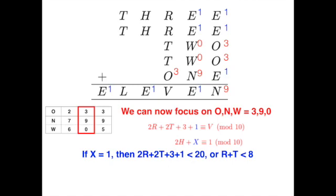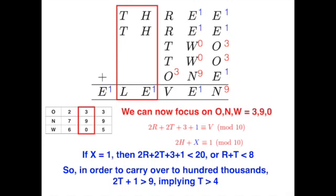Again, we follow the similar sort of reasoning from before. Firstly, X which stands for the carryover from the hundredth to the thousandth digit column, could either be 1 or 3. If we assume X is 1, then the hundredth column, 2R plus 2T plus 3 plus 1, must be less than 20, to prevent a carryover of 2. And this simplifies to R plus T must be less than 8. And in a completely analogous manner as before, we must have 2T plus 1 greater than 9, for a carryover to the hundred thousandth digit, implying T must be larger than 4.